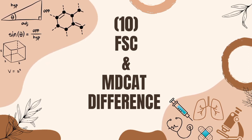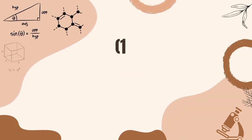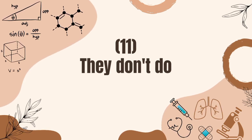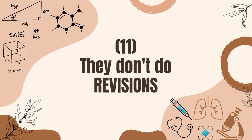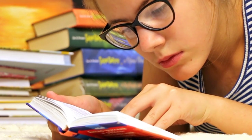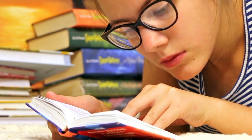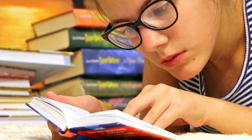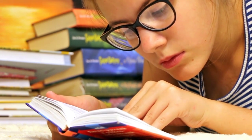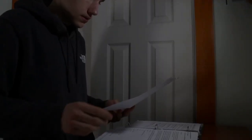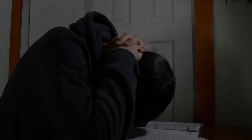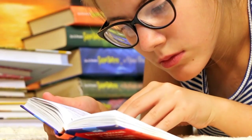Mistake number eleven, which is possibly the biggest mistake ever, is that students don't do revisions. Trust me, if you don't do revisions, you will get yourself into trouble. When you complete a topic, do revisions. If you don't revise, you will forget your previous topics and when you open them again, it will feel like you are seeing them for the first time. That's why you must always do revisions.